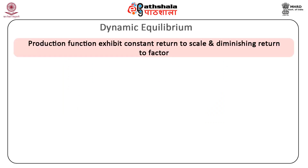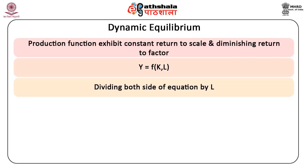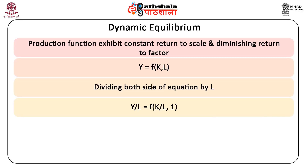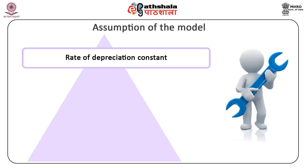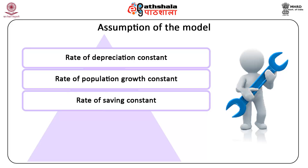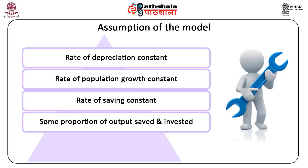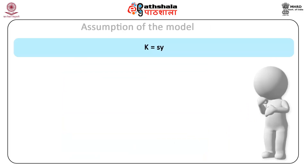Moving on to the assumptions of the model: the production function exhibits constant returns to scale and diminishing returns to factor, i.e., y = f(k, l). Dividing both sides of the equation by l, y/l = f(k/l, 1), which can be written as y = f(k), where y = Y/L and k = K/L (both in lowercase). The rate of depreciation is constant, the rate of population growth is constant, and the rate of saving is also constant.